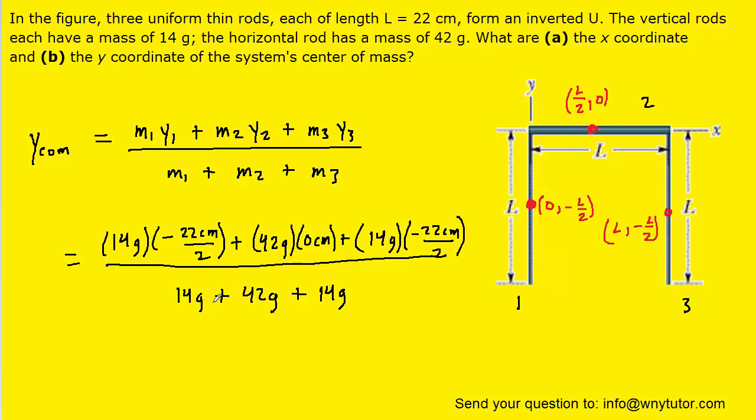So there are the values plugged in. Make sure you pause the video and just understand where each number is coming from. Once you crunch that down on your calculator, you should get negative 4.4 centimeters. So this would be the y coordinate of the center of mass of this system.